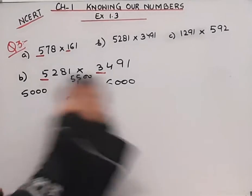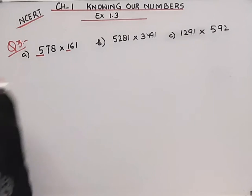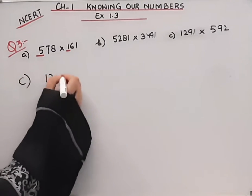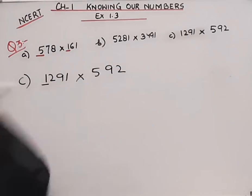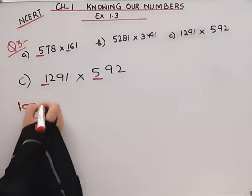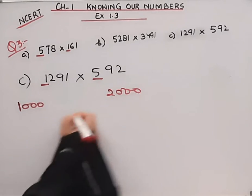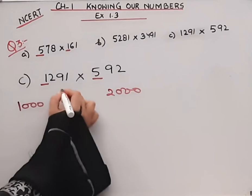Now let's move on to the C part. C part is 1291 into 592. The last place is the thousands.